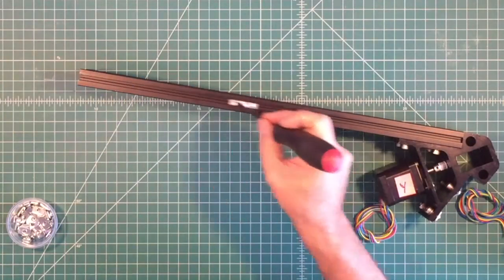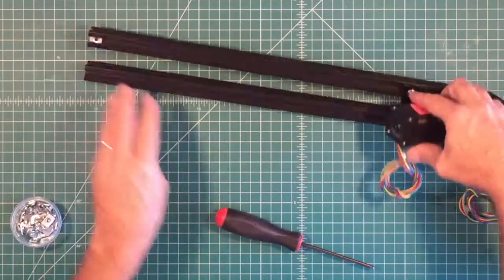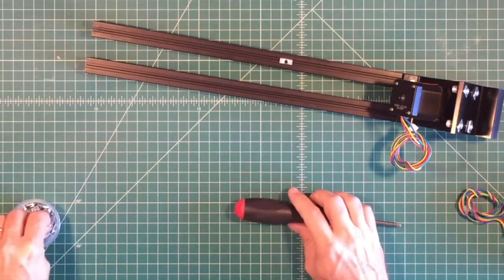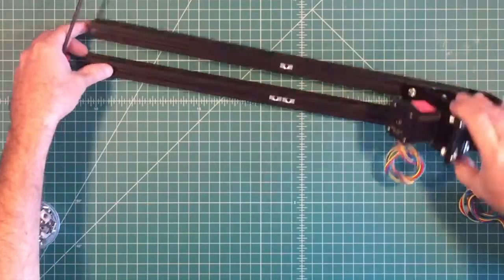Isolate the Y motor assembly and insert five T-nuts. Two on the top side of the upper extrusion, one on the inside of the upper extrusion and two on the inside of the lower extrusion.